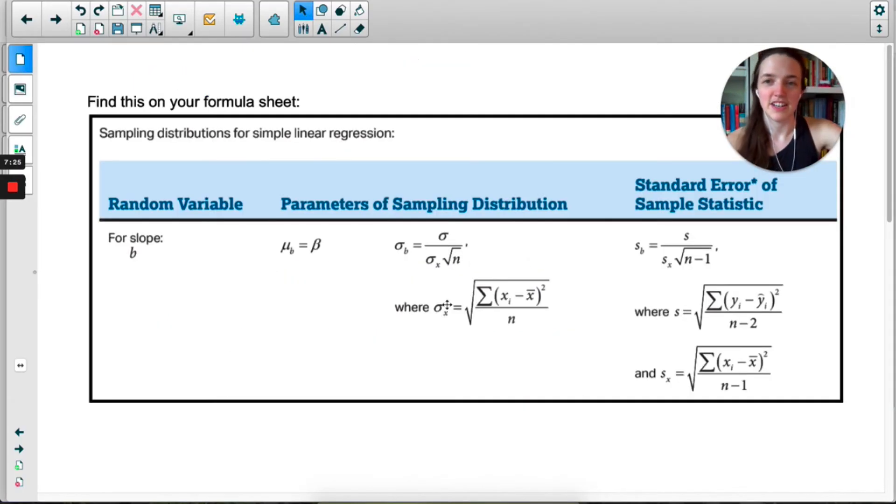Take out your formula sheet and find the section that says sampling distributions for simple linear regression. This is the last section of our second page. On the left you can see the random variable is b, lowercase b, the slope from our sample. If we're thinking about the sampling distribution of the slope, we take a random sample of 30 students over and over, and each time find the slope of the scatterplot. The mean of all those slopes is beta, the true slope from the whole population.